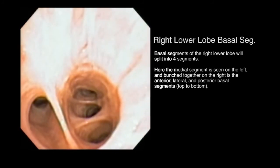In a typical patient, the basal trunk will divide into four segments. Here the medial segment is seen on the left, and bunched together on the right are the anterior, lateral, and posterior basal segments from top to bottom.